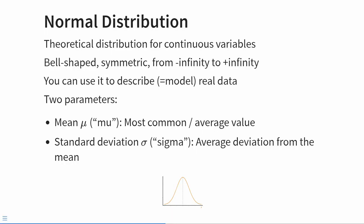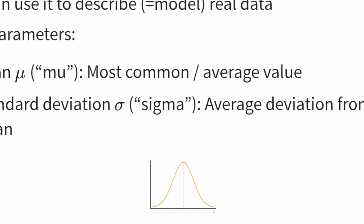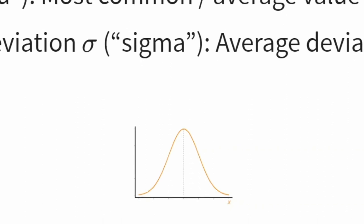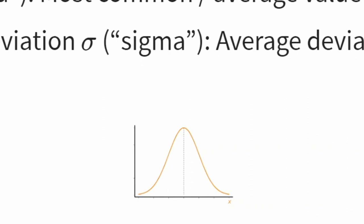There are very many different probability density functions, but in this course we introduce the most widely used one — it's so widely used that people call it the normal distribution. You can see an example at the bottom of the slide. Its defining features are that it's bell-shaped, symmetrical (the left half is identical to the right half), and it runs along the number line from minus infinity to plus infinity.